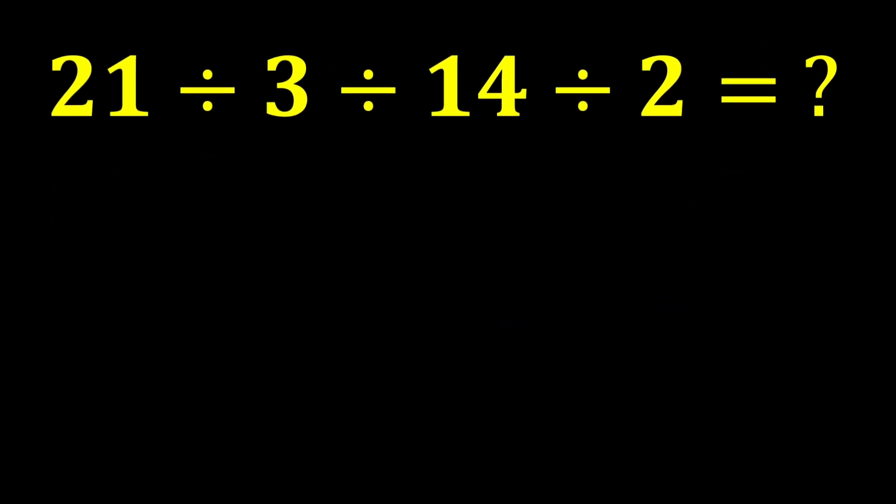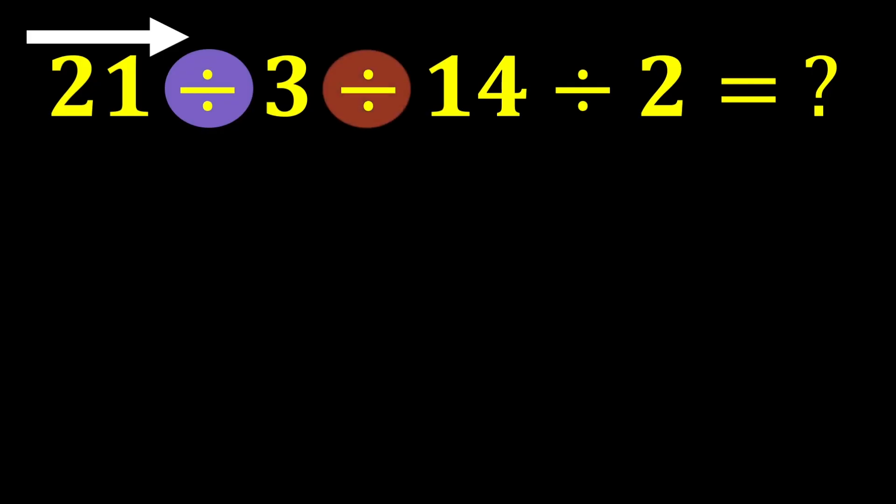In this expression, there is more than one division, and since divisions have equal priority, we move from left to right and perform the divisions in order. First this division, then this division, and finally this division.